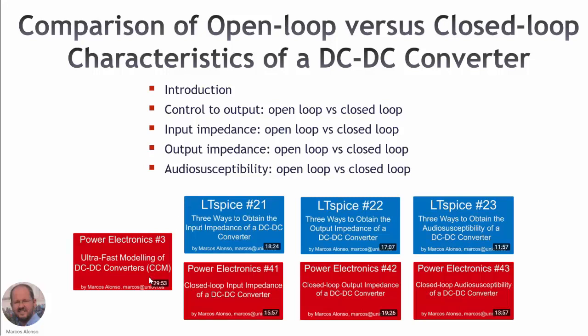These are relevant videos we have seen before related to how to model DC-DC converters — Power Electronics number three — and in these other videos we have seen how to obtain the different transfer functions in open loop and in closed loop, both for input impedance, output impedance of the DC-DC converter, and the audio susceptibility of the DC-DC converter. Now it's interesting to compare these different transfer functions in open loop and in closed loop.